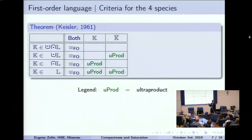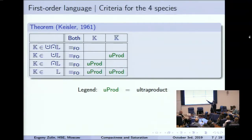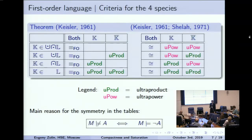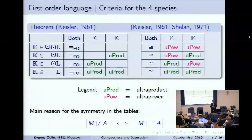From this point of view, we can review again Keisler's result. The last two lines are exactly Keisler's theorem, and we obtain a symmetric table. If we want to get rid of the linguistic elementary equivalence relation, we can do this at the price of adding the ultrapower in all empty cells. The main reason for the symmetry in these tables is that we can internalize negation: if a formula is not true in a first-order model, then its negation is true, so meta-negation can be internalized at the level of formulas.